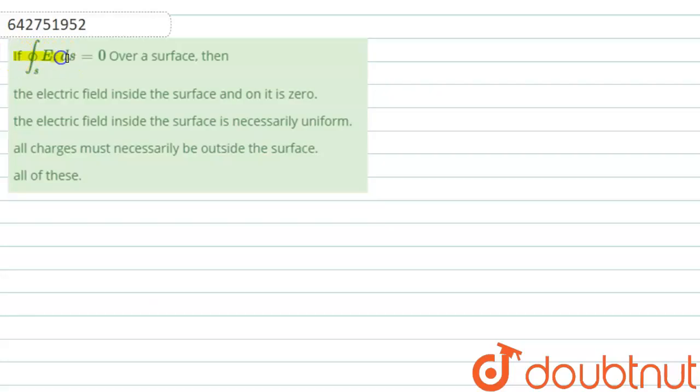Students, the question is: if the closed integral E dot ds is equal to 0 over the surface, then the electric field inside the surface and on it is 0.